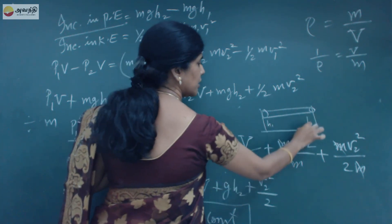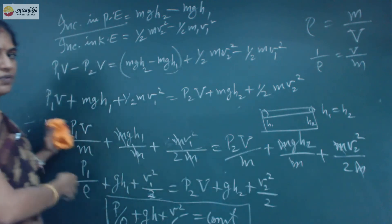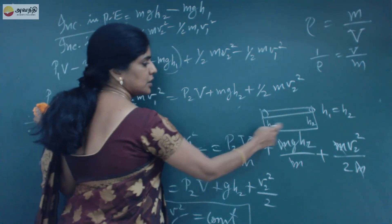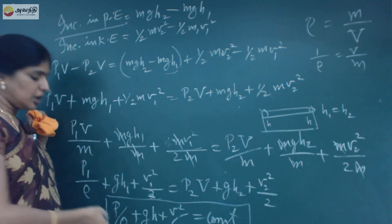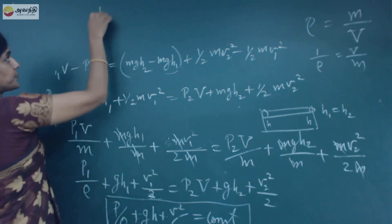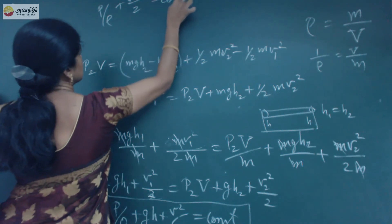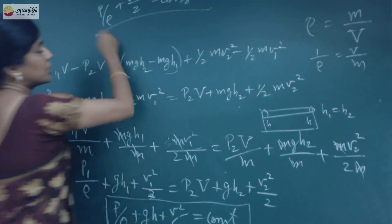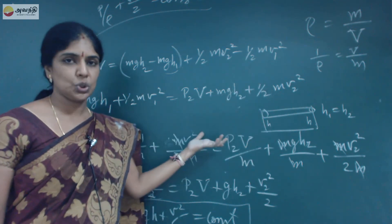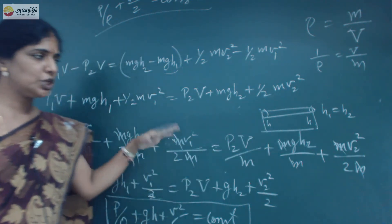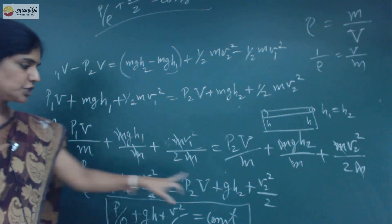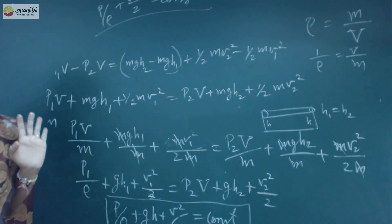What happens if the tube is exactly horizontal? In that case there is no height difference, so H1 equals H2, and there is no potential energy difference between the two points.